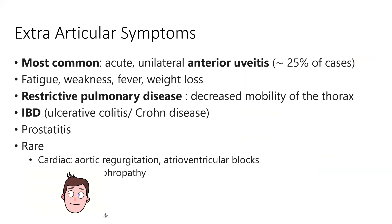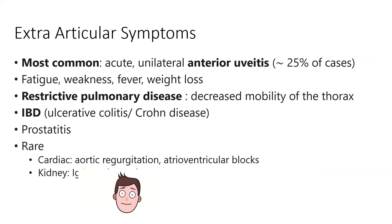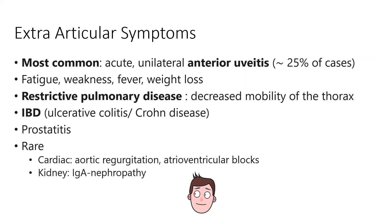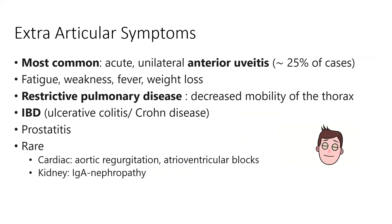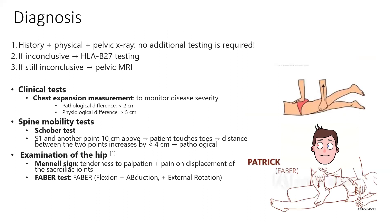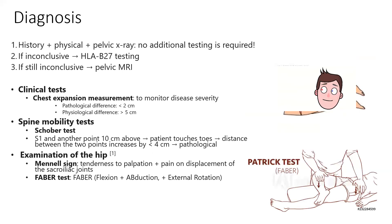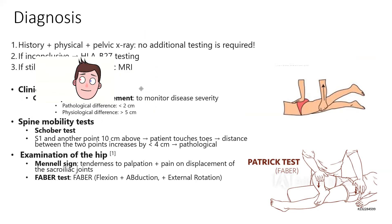Remember the two rare ones: cardiac disease with aortic regurgitation and atrioventricular blocks in the conduction system, and IgA nephropathy in the kidney.